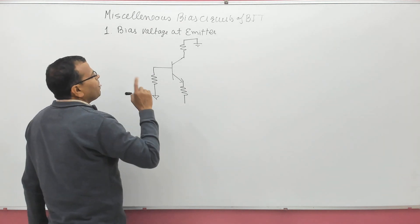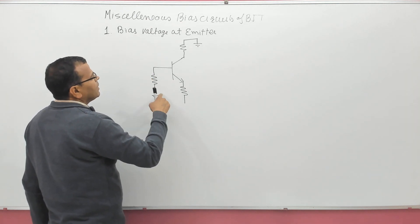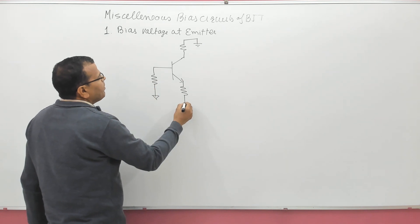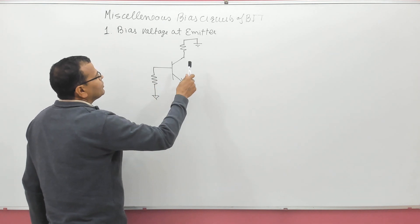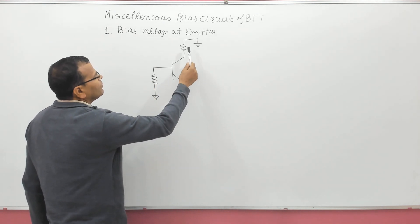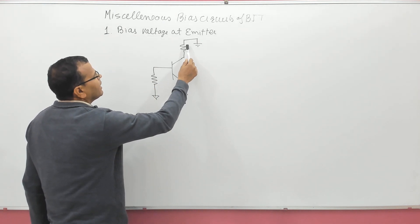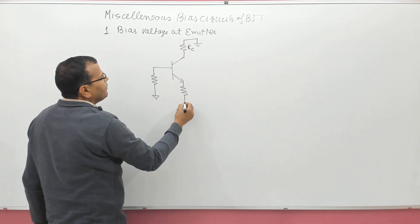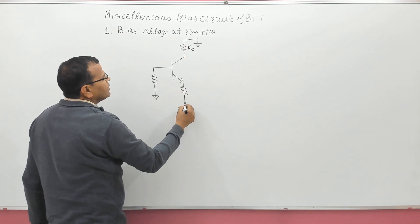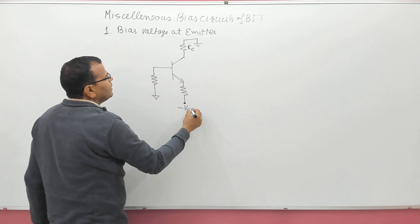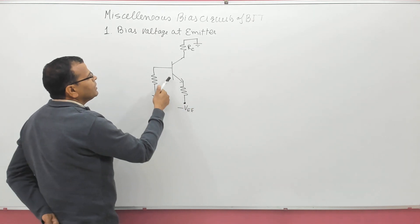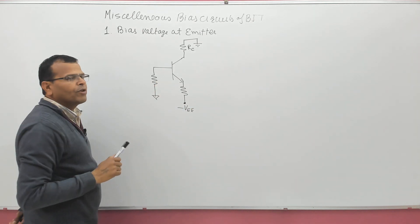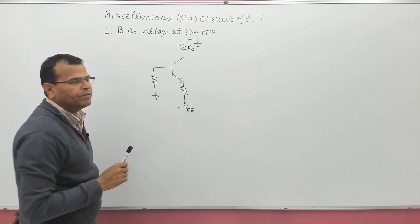Remember, for biasing of this circuit, if biasing voltage is given at the collector, then it is positive voltage. And if biasing voltage is given at the emitter, then it should be negative voltage, so that the base-to-emitter junction is forward biased.